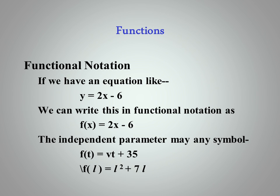The independent parameter may be any symbol. For instance, probably the most common symbol and the most common independent parameter physically is time, especially in electronics or electricity. So F of T here is VT plus 35.